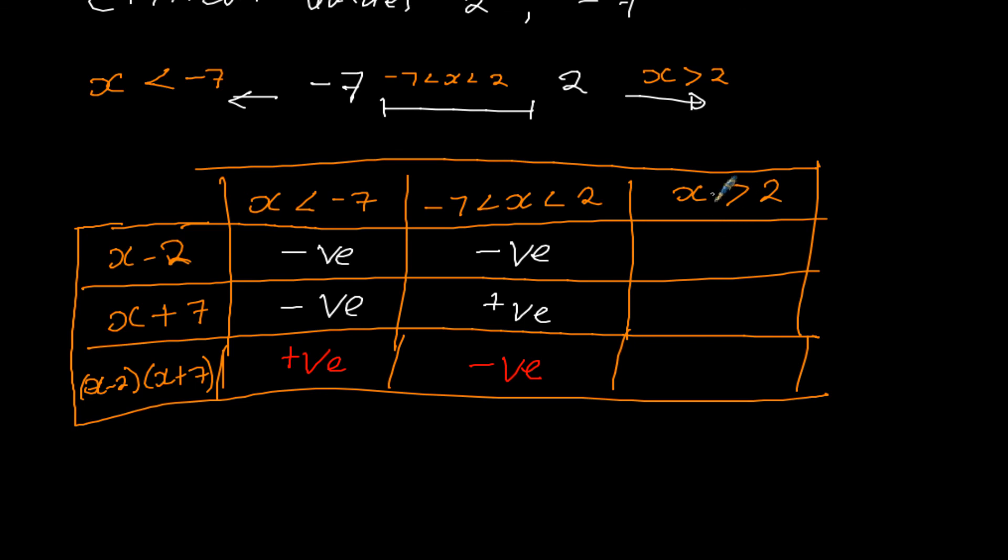Then finally, values greater than 2. We can use 10. 10 minus 2 gives us positive result. 10 plus 7 gives us positive outcome. And when I multiply positive times positive, I get positive.